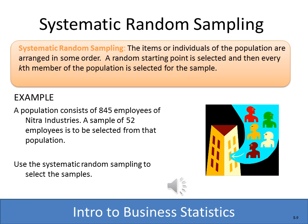Besides simple random sampling, there's also systematic random sampling, where you find a starting point and pick every nth member — every third, fifth, or seventh member. There are formulas to compute how many members to skip over, which we'll see on the next slide.